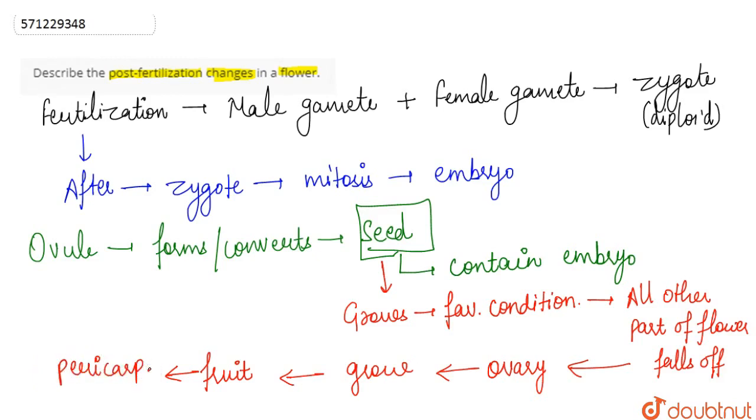So in simple words, the post-fertilization changes that take place in a flower are basically three. The three changes are that the ovule develops into seed, the ovary develops into fruit, and lastly, all rest of the floral parts fall off. So these are the major changes.